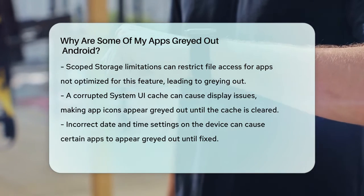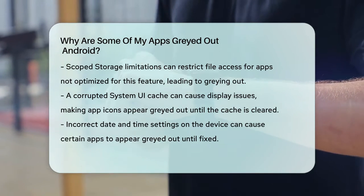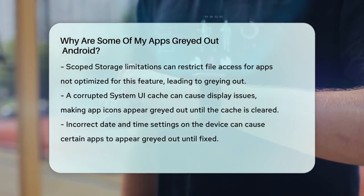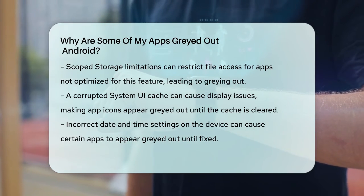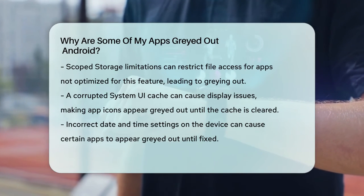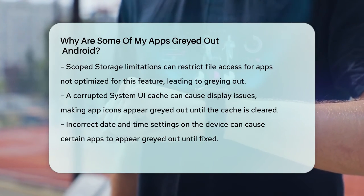Finally, if your device's date and time settings are incorrect, some apps that rely on accurate timing may appear grayed out until you correct the settings.